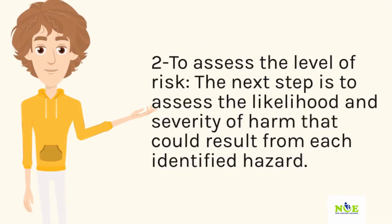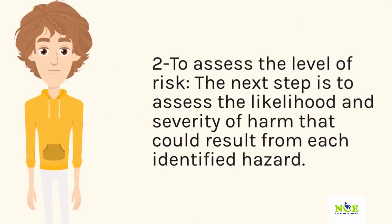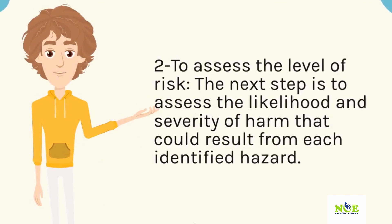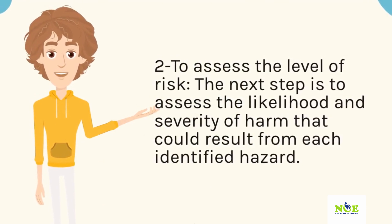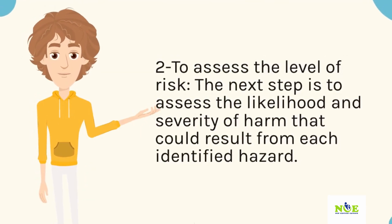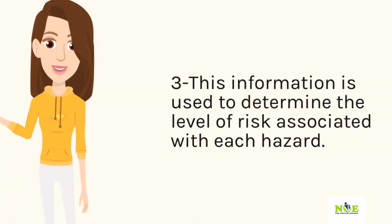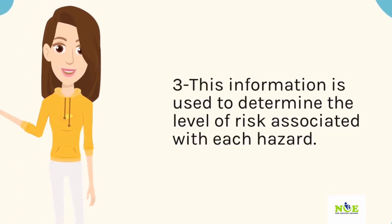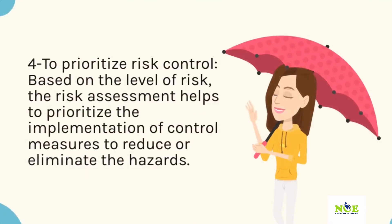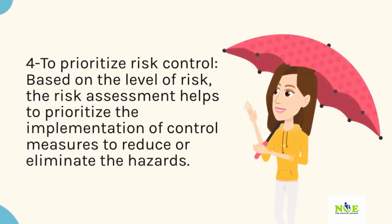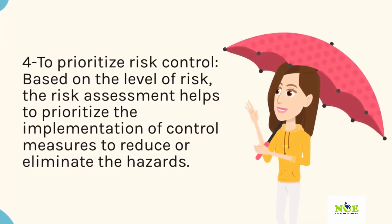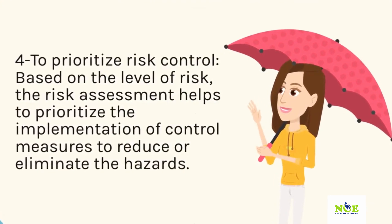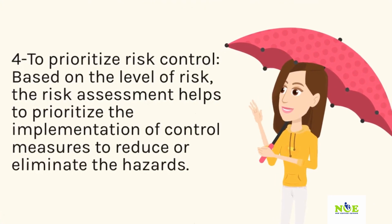2. To assess the level of risk. The next step is to assess the likelihood and severity of harm that could result from each identified hazard. This information is used to determine the level of risk associated with each hazard. 3. To prioritize risk control. Based on the level of risk, the risk assessment helps to prioritize the implementation of control measures to reduce or eliminate the hazards.